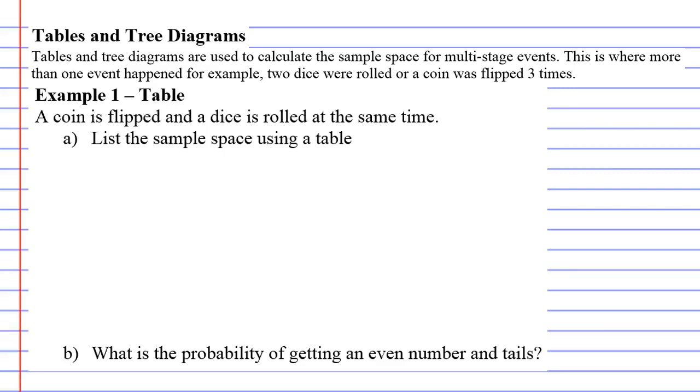Tables and tree diagrams. These are used for when you're calculating the sample space for multi-stage events. This means that more than one event has occurred.